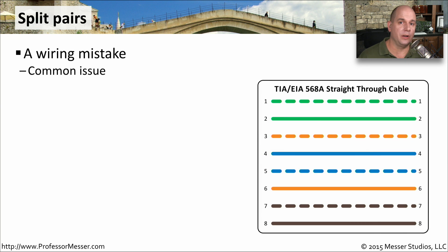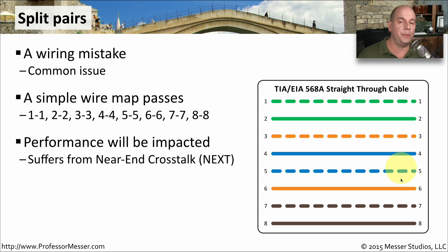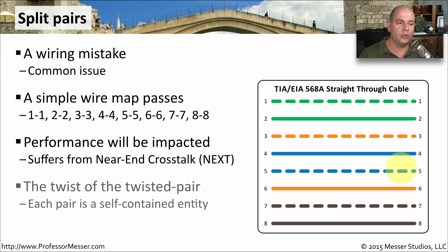Sometimes the problem might be more difficult to identify. This may be the case with something like a split pair — it's a wiring problem and a very common mistake. One of the challenges is that if you were to do a simple wire map, it would look perfectly normal: pin 1 connects to pin 1, pin 2 to pin 2, pin 3 to pin 3, and so on. But you're going to have problems because there will be a lot of near-end crosstalk, causing bad throughput even though the cable map shows everything wired properly. It's all about the twist of the twisted pair — we must keep all pairs together, because splitting them causes performance problems.